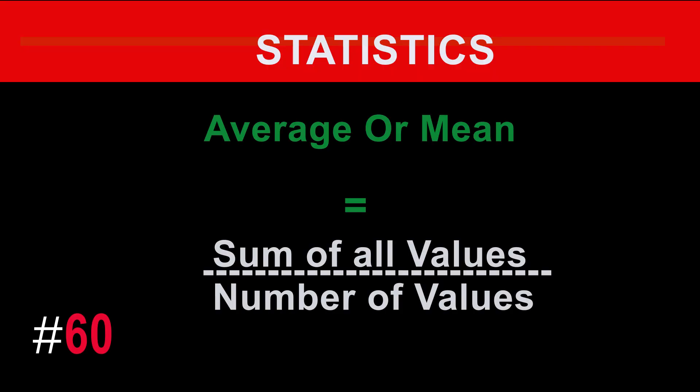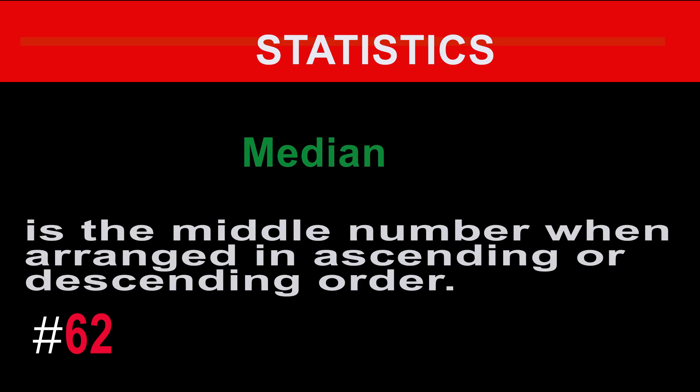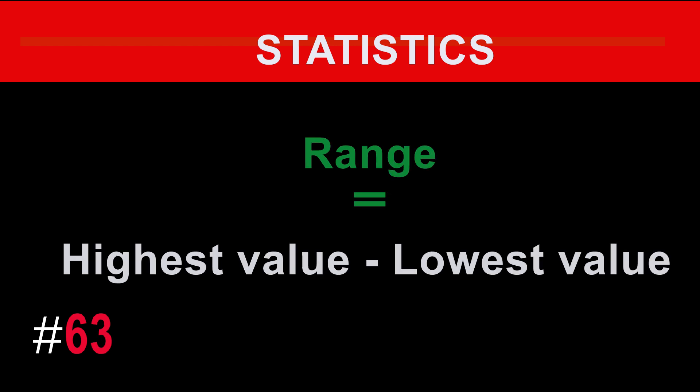Mean is the sum of all values divided by the number of values. Mode is the most frequently occurring number in a set of numbers. The median is the middle number when values are arranged in ascending or descending order. Range is the highest value minus the lowest value.